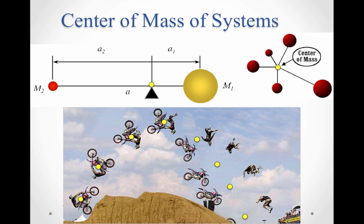In our last system, we have a motorcycle rider and a motorcycle. Combined at first, the center of mass is about right here. As the rider is flipping, the center of mass is still right between the rider and the bike. But as the rider starts to come away from the bike, the center of mass starts to move a little bit. When the rider flies off, the center of mass shifts accordingly. What we would see is that even though the system is quite dynamic, the center of mass follows a parabolic trajectory as if this were still one single particle flying — and that's the power of center of mass.